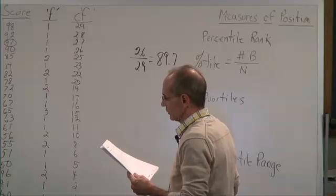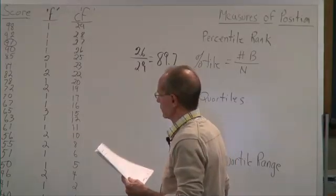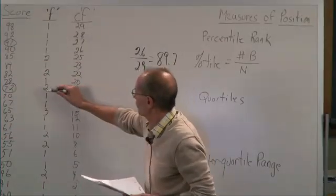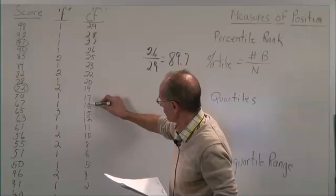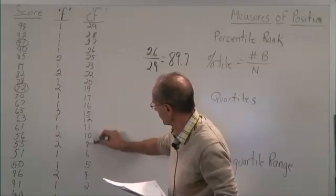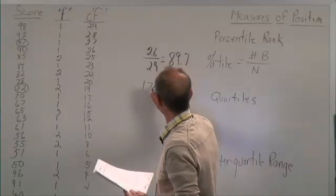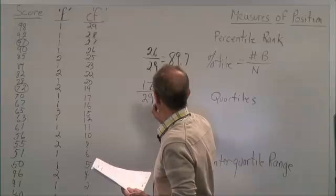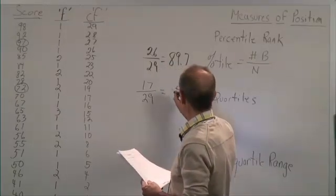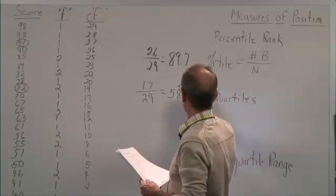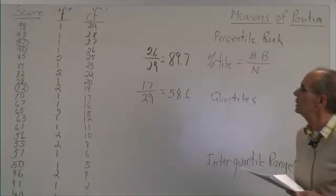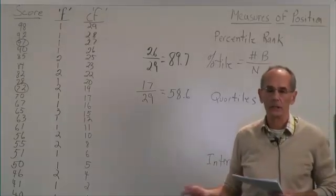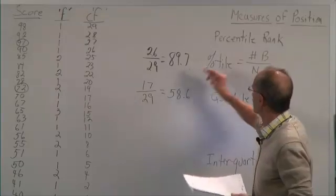Let's use another example. Let's say we wanted to compute the percentile rank of someone who scored a 72. Below 72, there are 17 scores — 17 people scored below 72. We divide 17 by the total number of scores, which is 29, and you would get a percentile rank of 58.6. So someone whose score is 72 is doing better than 58.6% of the other people who took that test. And that's how you compute a percentile rank.